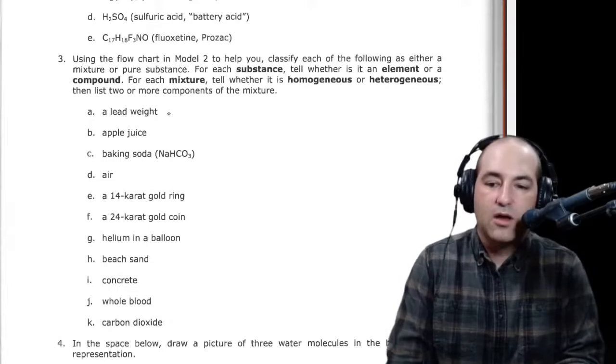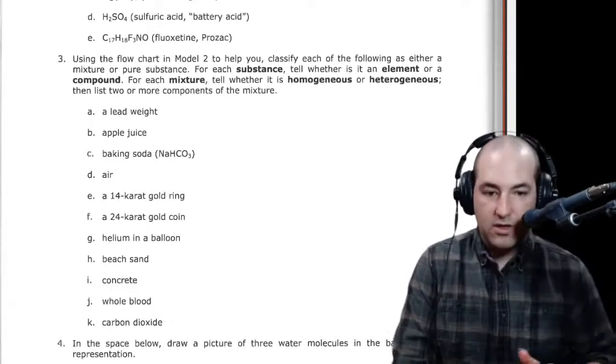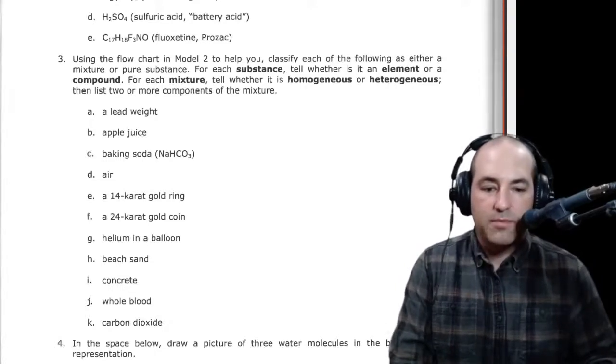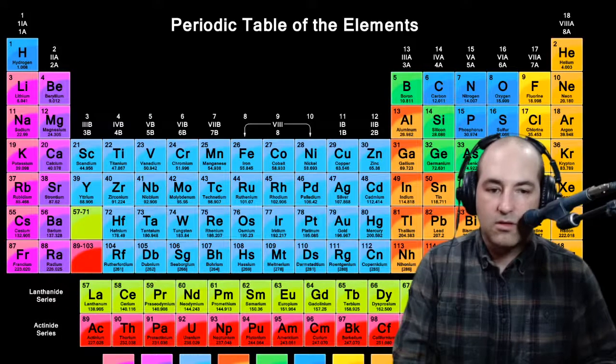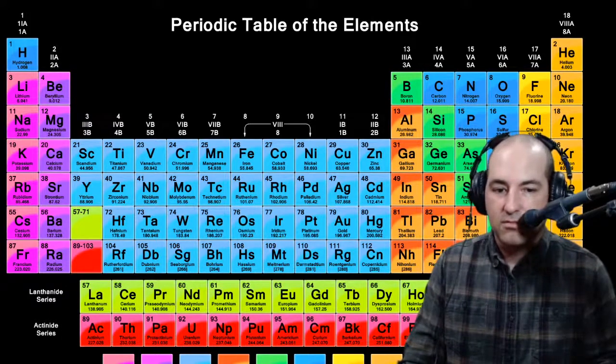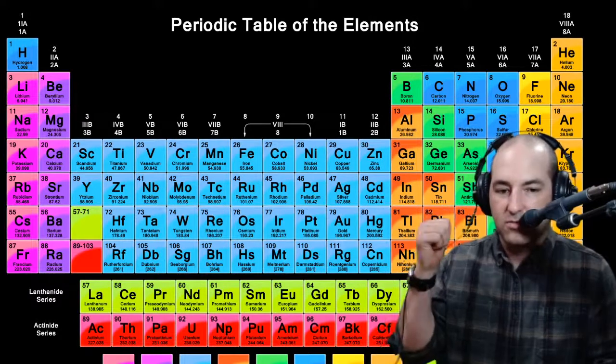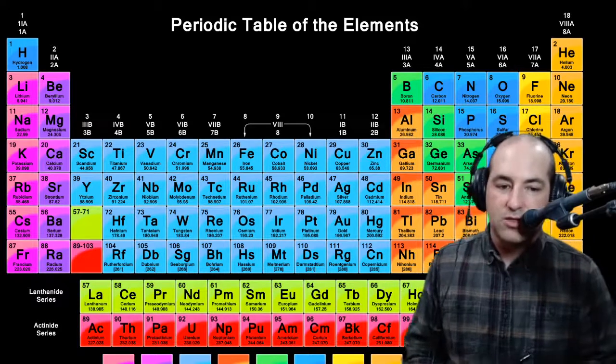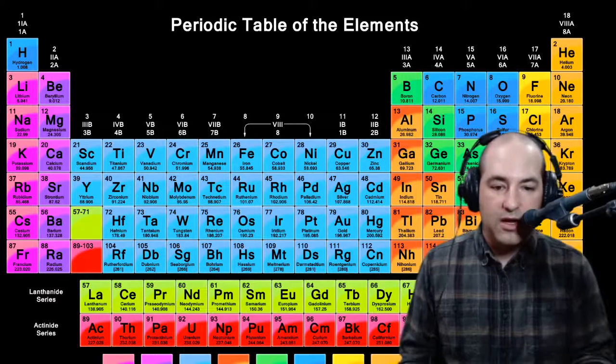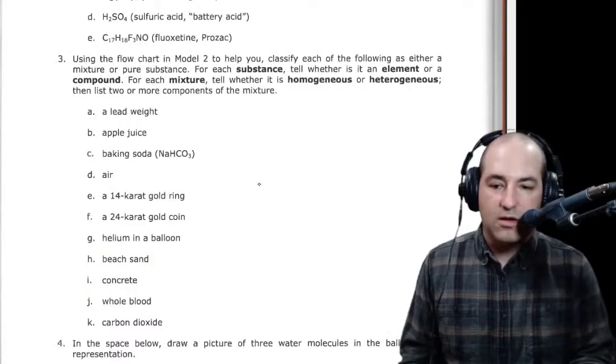So lead weight, we're going to assume this is made only of lead. So we can look at our periodic table and see if we can find lead. It's right over my shoulder right there. There's lead. It is an element. So if it is an element and it's on the periodic table, then we can pretty clearly say that that is a pure substance and an element.